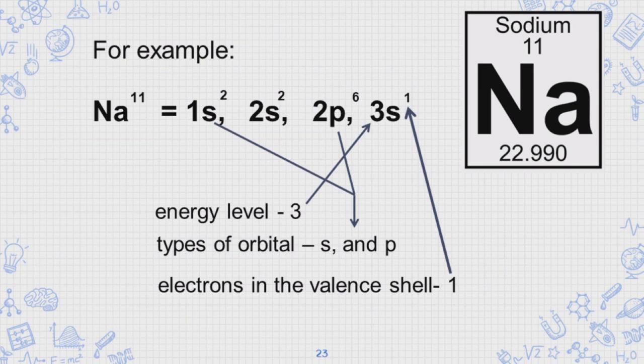The electron configuration is 1s2, 2s2, 2p6, 3s1. The highest energy level is 3. Types of orbital: s and p. And the electrons in the valence shell is 1.